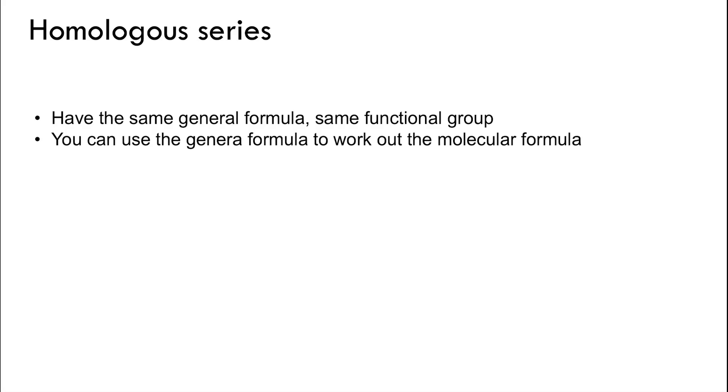You can use the general formula to work out the molecular formula of your compounds. For example, if you have alkenes, the general formula is CnH2n. So for the member of alkene which has six carbon atoms, which is hexene, it's going to be C6H12.